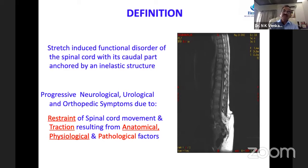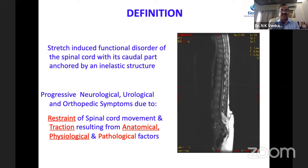Tethered cord has been defined as a stretch-induced functional disorder of the spinal cord, with its caudal part anchored by an inelastic structure. A more comprehensive definition includes progressive neurological, urological, and orthopedic symptoms due to restraint of spinal cord movement and traction resulting from anatomical, physiological, or pathological factors.